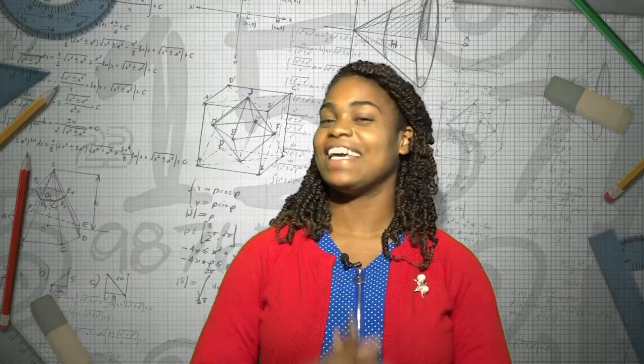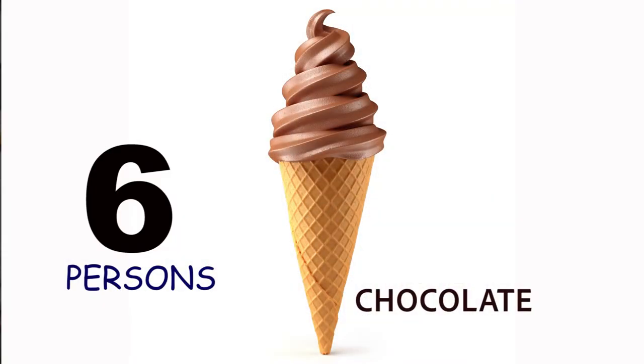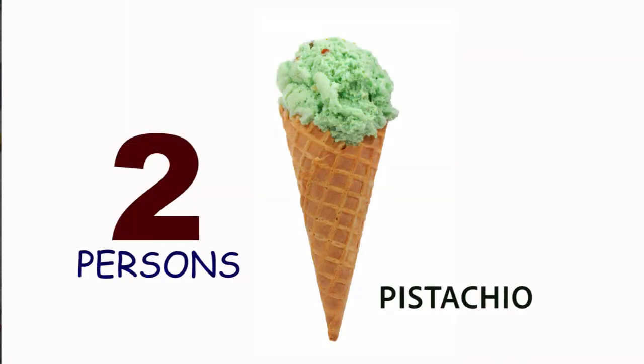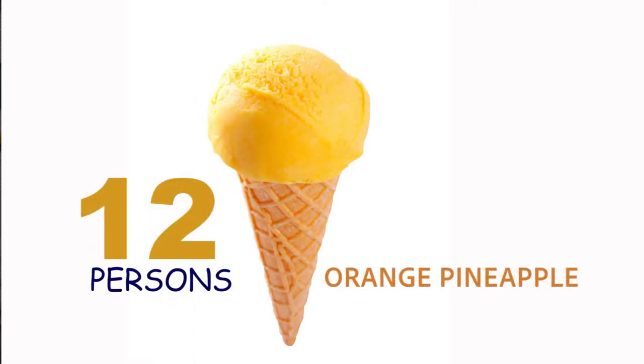The first ice cream most children enjoy is chocolate. Miss Brown found out that in her class there are six persons who enjoy eating chocolate ice cream, ten persons who enjoy eating pistachio ice cream, four persons who enjoy cookie and cream, and twelve persons who enjoy orange pineapple. Where would you cast your vote if you were in this class?